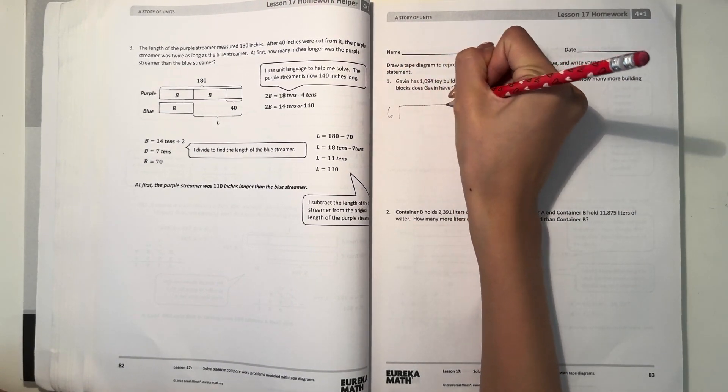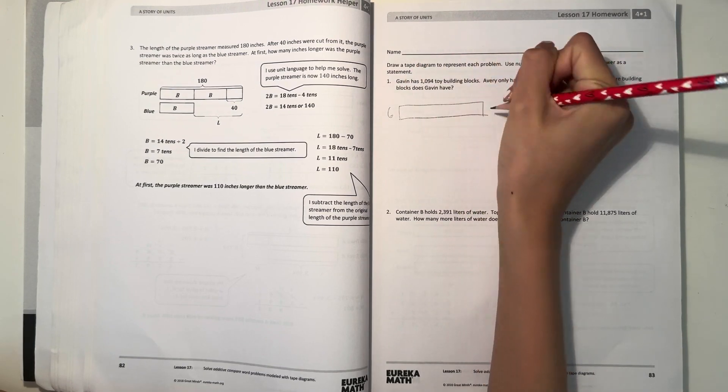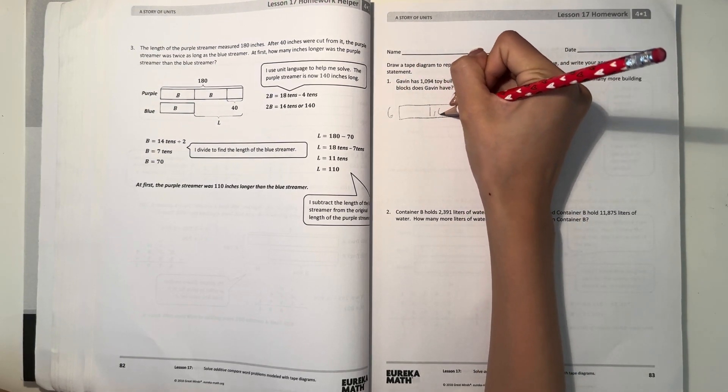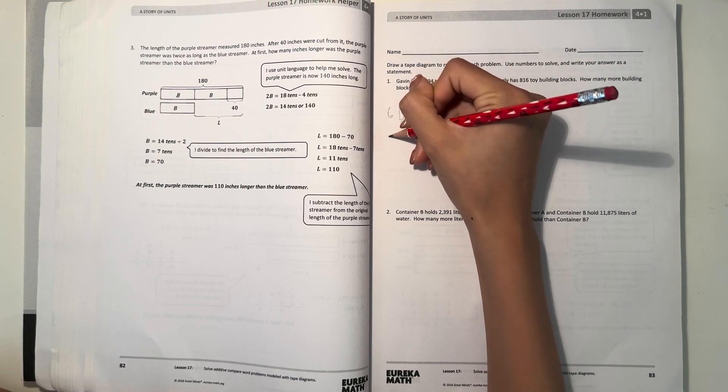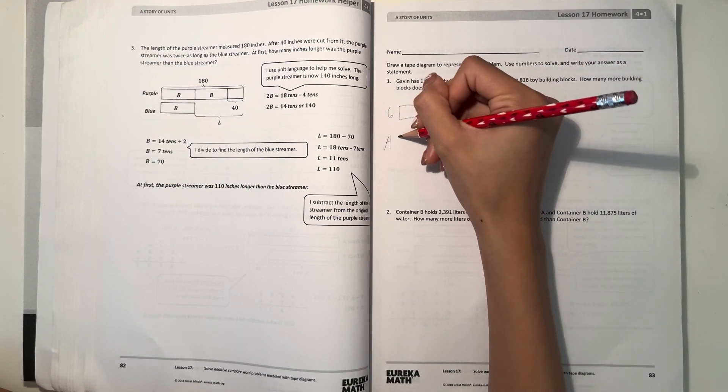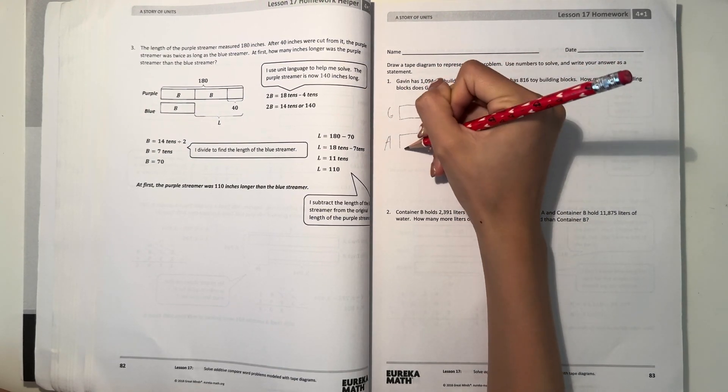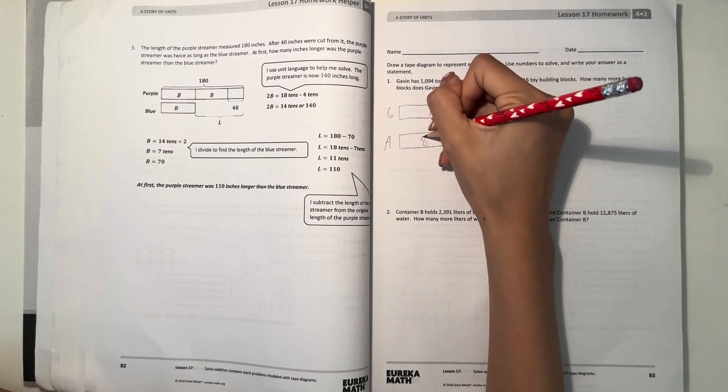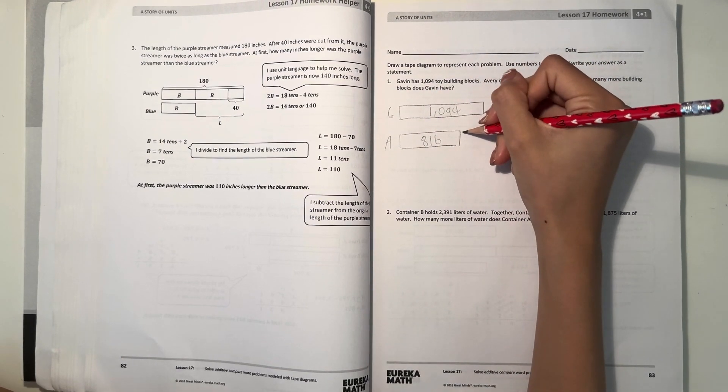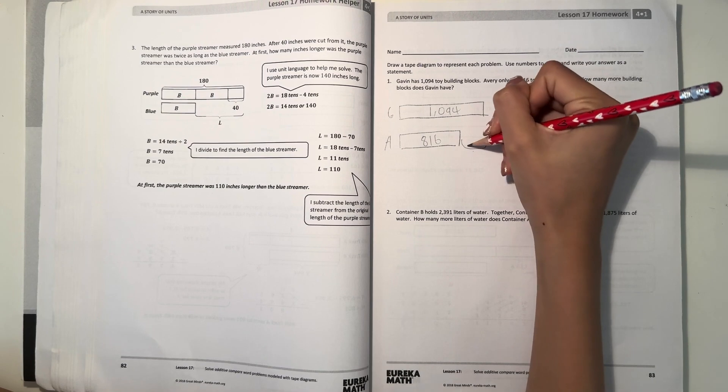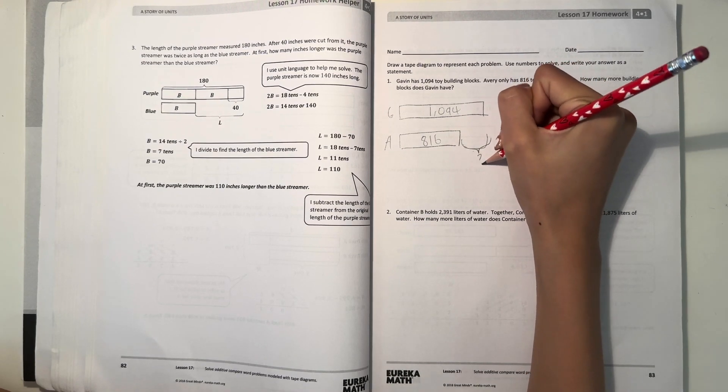for Gavin. So Gavin, he has 1094. Then Avery only has 816. So our job is to figure out how much more does Gavin have than Avery.